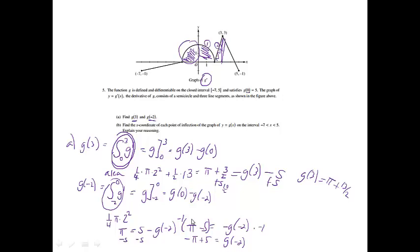Subtracting 5 from both sides gives pi minus 5 equals negative g of negative 2, and multiplying both sides by negative 1, g of negative 2 equals negative pi plus 5. That was worth 3 points: one for using g of 0 equals 5, one for correctly finding g of 3, and one for correctly finding g of negative 2.